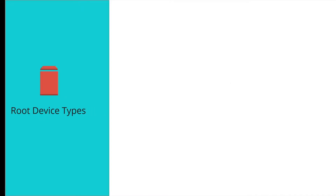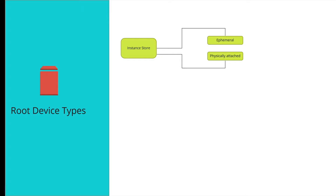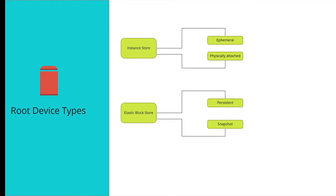Root device type refers to the root data storage type for your instances. EC2 provides two levels of block storage. The first is instance store, which is ephemeral storage physically attached to the host — if you reboot or shut down the server, data will be lost. The second is Elastic Block Storage, or EBS, which is persistent storage — even if you shut down and reboot your instance, data will still be there.